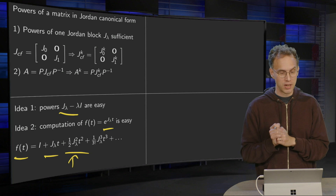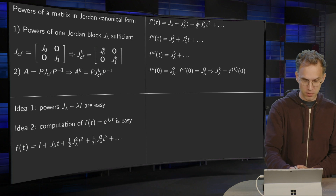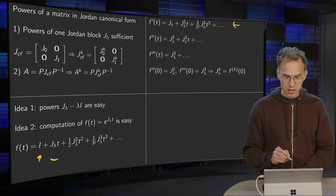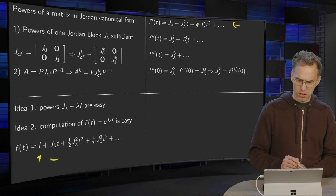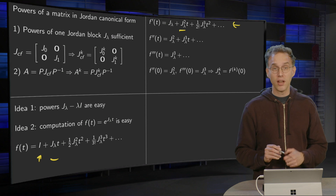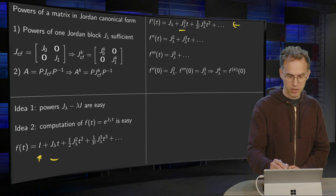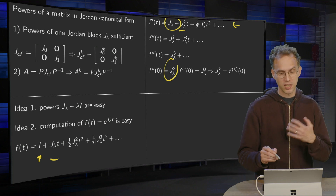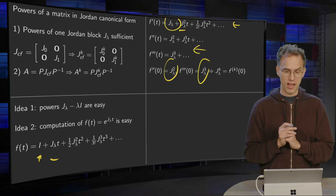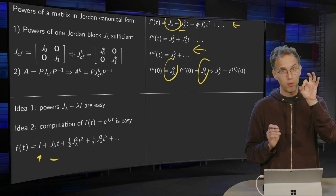So we can compute f(t). The idea is to get the J_λ powers out of f(t). If you compute f prime, the constant term cancels and you get J_λ. If you differentiate again to get f double prime, you get J_λ squared, and so on and so forth. Now if you substitute t equals zero, f prime of zero gives you exactly J_λ, f double prime of zero gives you J_λ squared, f triple prime of zero gives you J_λ cubed. So by differentiating f(t) a number of times and plugging in t equals zero, you can recover all powers of J_λ.